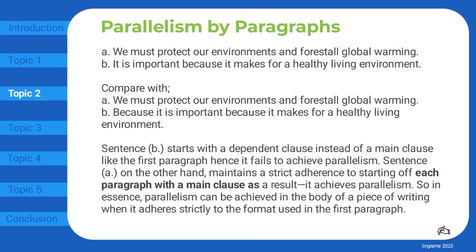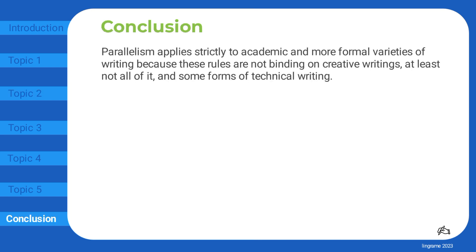So in essence, parallelism can be achieved in the body of a piece of writing when it adheres strictly to the format used in the first paragraph. Parallelism applies strictly to academic and more formal varieties of writing because these rules are not binding on creative writings — at least not all of it — and some forms of technical writing.